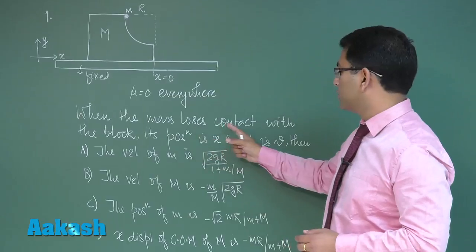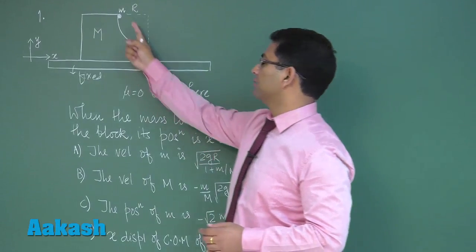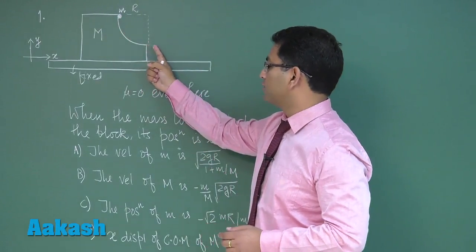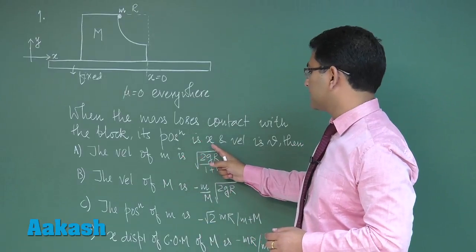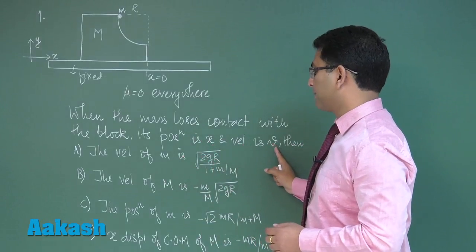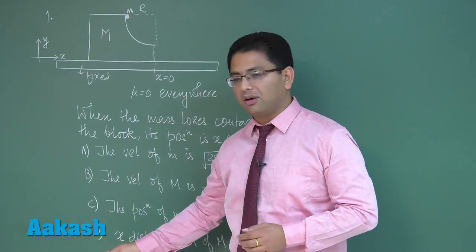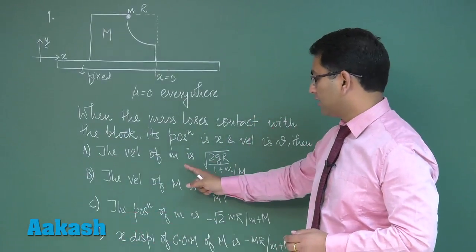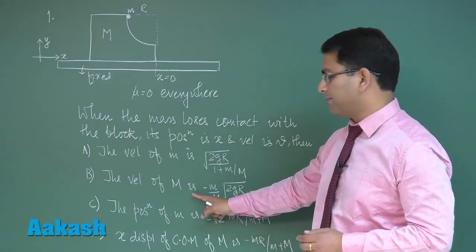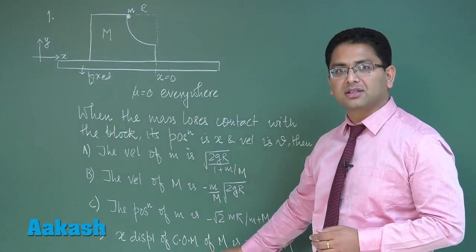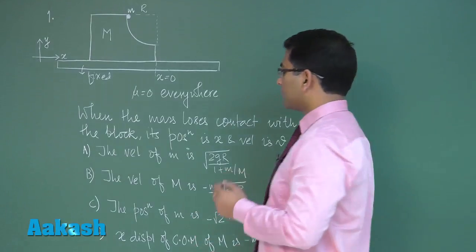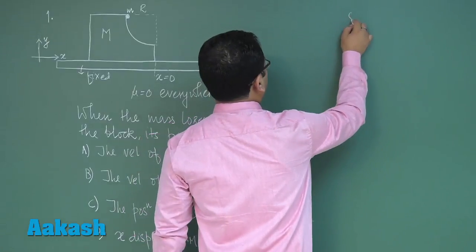When the mass loses contact with the block, in other words when it finally comes out from here, its position is x and velocity is v. Now we need to calculate or we need to solve for these following options: velocity of small m, velocity of capital M, then the position. So let's begin starting with the solution part.